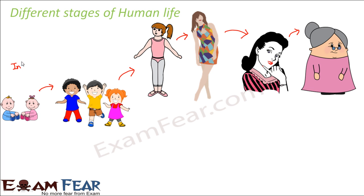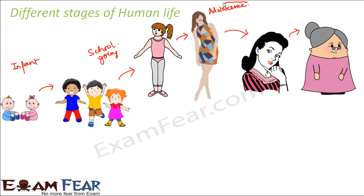These are the various stages through which every human being passes in life. First he is an infant, then of school-going age. Then he reaches an age where he is neither a child nor an adult — something in between — and that age is nothing but adolescence, where you are just entering from childhood to adulthood. So in this lesson we are going to focus on adolescence.